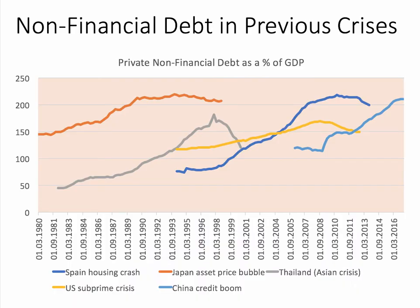This is a chart showing non-financial debt of the private sector in Spain, the United States, Japan, China, and Thailand in the years before they suffered a financial crisis. The build-up of non-financial debt, expressed as a percentage of GDP, has happened in a number of countries that subsequently experienced a financial crisis. People are asking whether the same thing will happen to China. The level of non-financial debt is now at a level consistent with what happened in Spain before the subprime crisis ten years ago and also Japan before the collapse of the asset price bubble in the early 1990s.